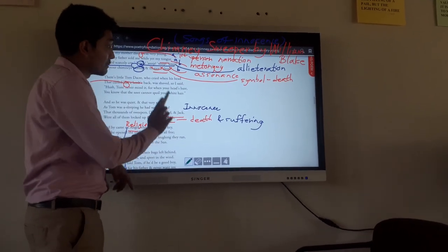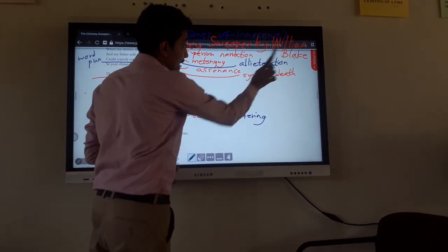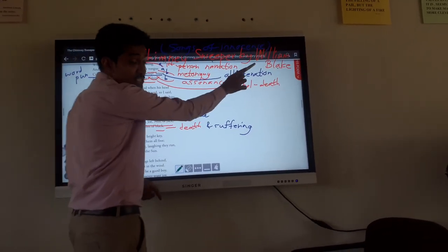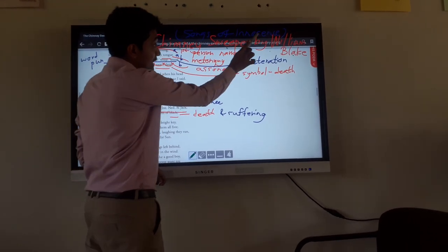We are going to learn a poem from A-level literature syllabus, the Chimney Sweeper by William Blake. William Blake belongs to the first generation of romantic poets. This poem belongs to the Songs of Innocence category.